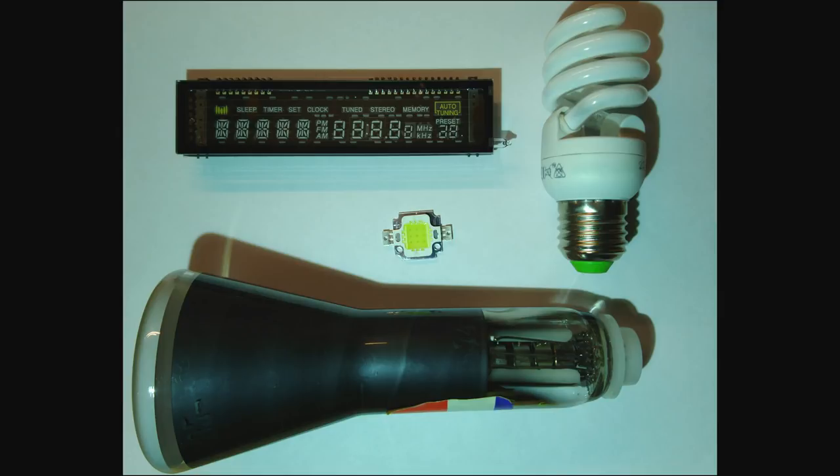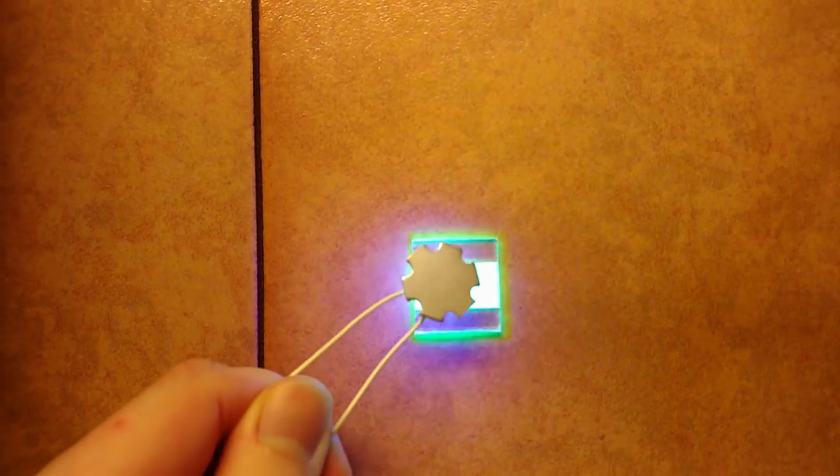Vacuum fluorescent displays, cathode ray tubes, fluorescent tubes and white LEDs. These are all example applications of phosphors. A phosphor is a material that emits light when excited.